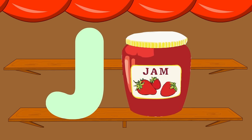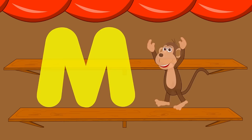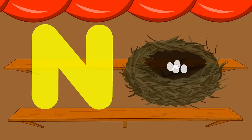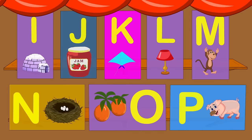I for igloo. J for jam. K for kite. O for blue. M for monkey. N for night. O for orange, o-o-orange. P for page.